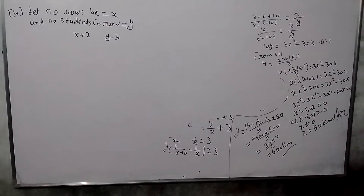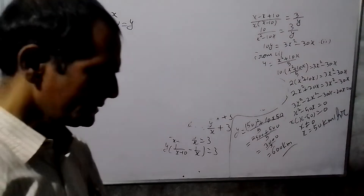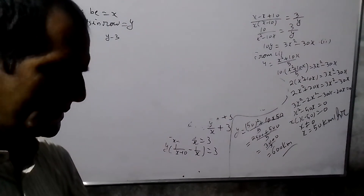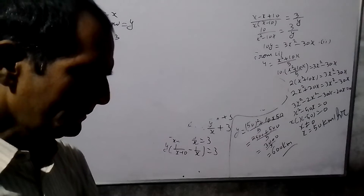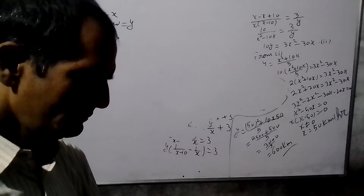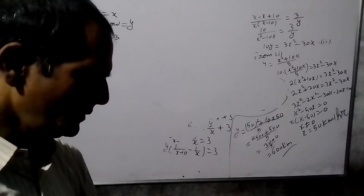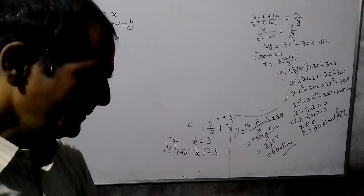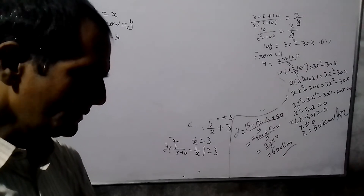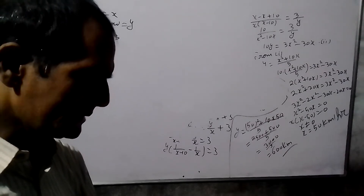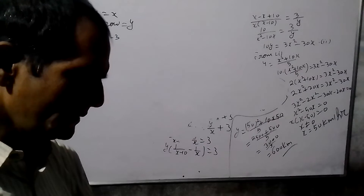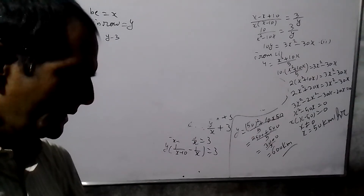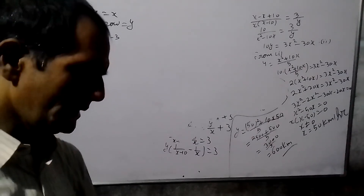Question number 4: Why are the students of a class made to stand in a row? If 3 students are more in a row, there will be 1 row less. If 3 students are less in a row, there will be 2 rows more. Find the number of students in the class.